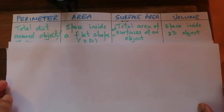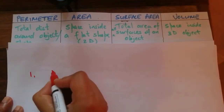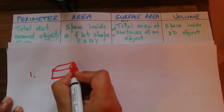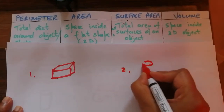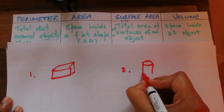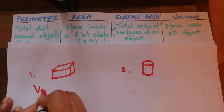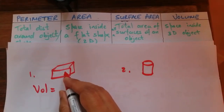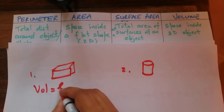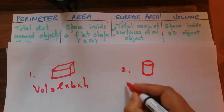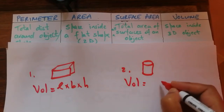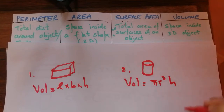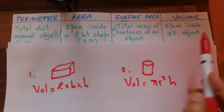We now move on to volume — again with two shapes: the rectangular prism and the cylinder. The equations will be provided. Volume of a rectangular prism = l × b × h. Volume of a cylinder = π × r² × h.